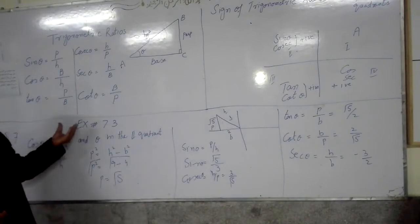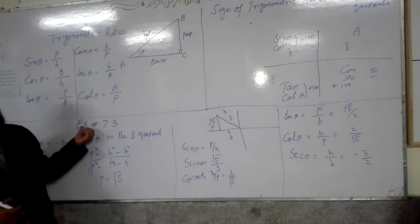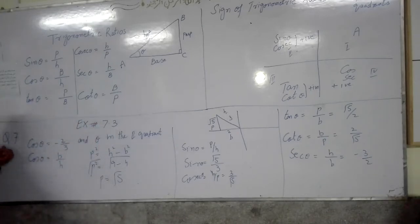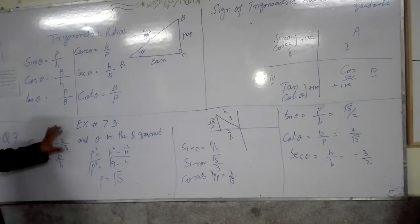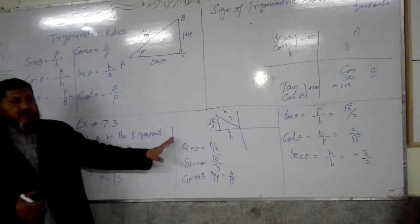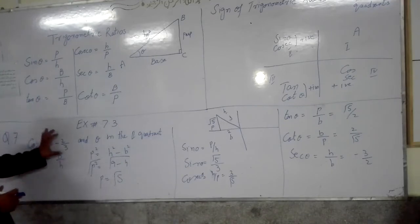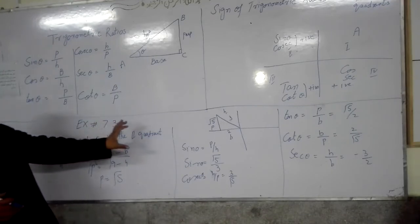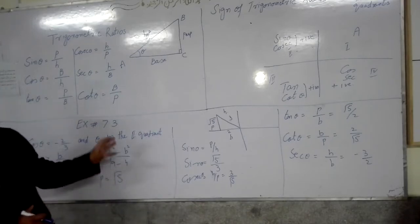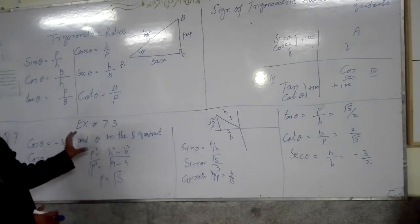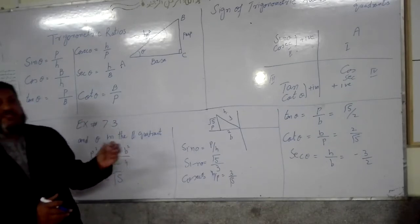Now we solve an example. Exercise 7.3, question number 7: given that cos θ = −2/3 and θ is in the second quadrant, find all the remaining trigonometric functions.